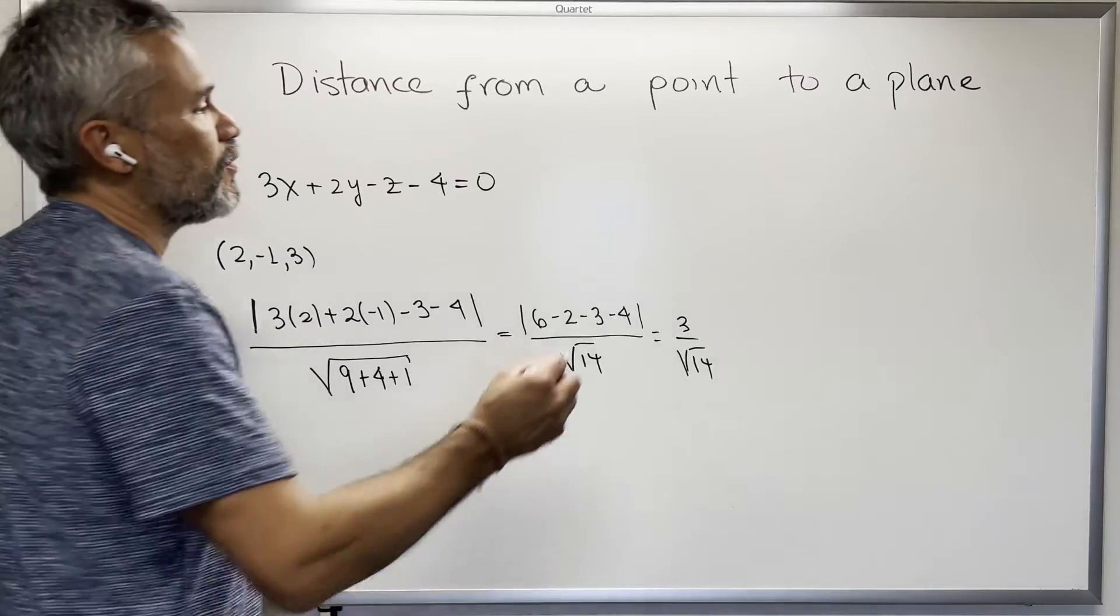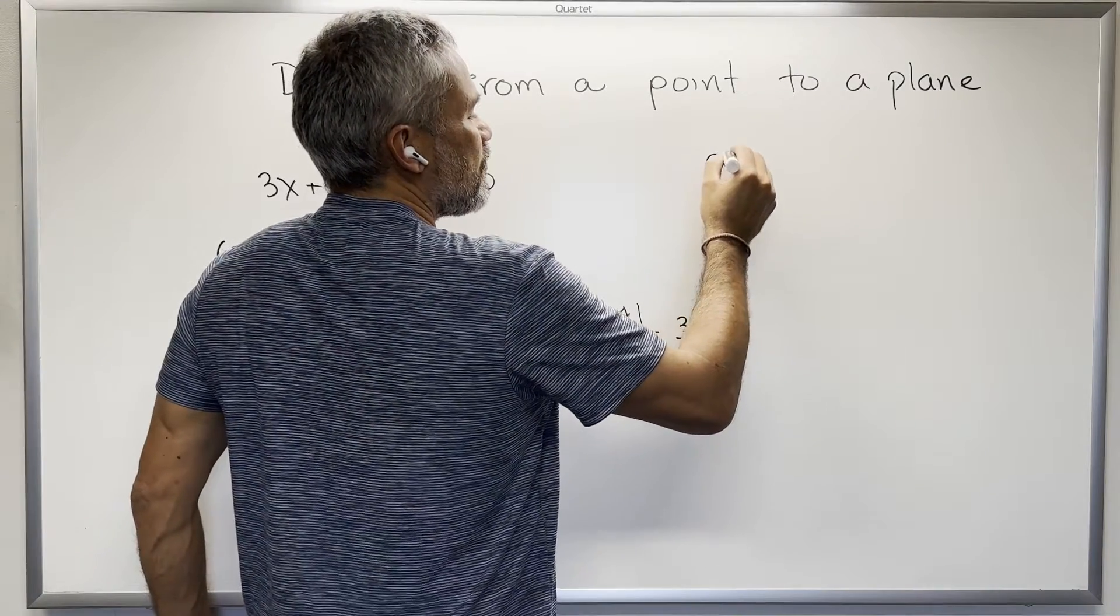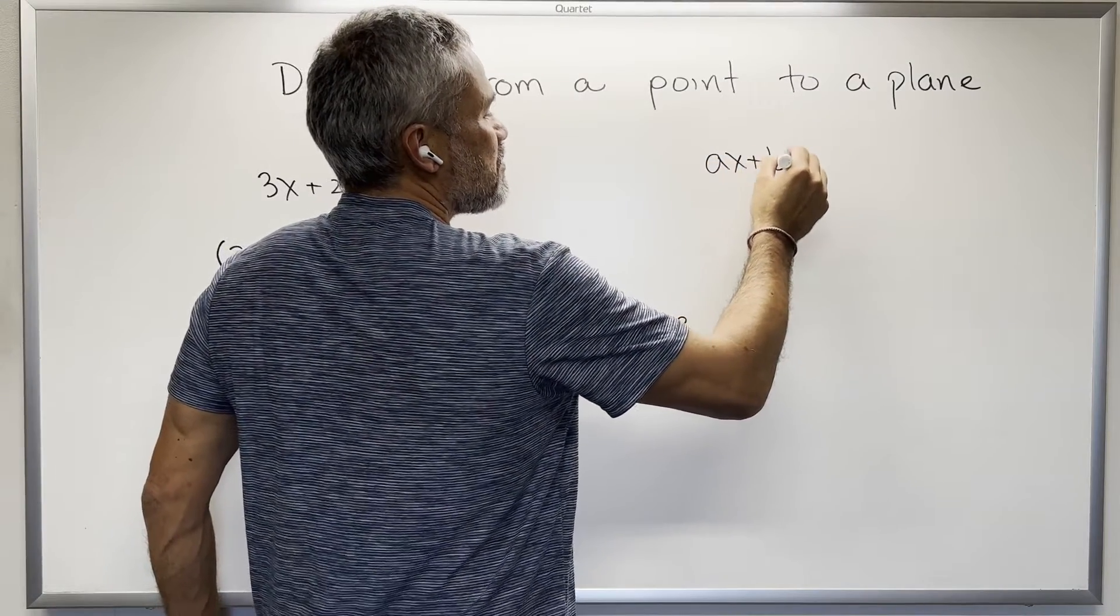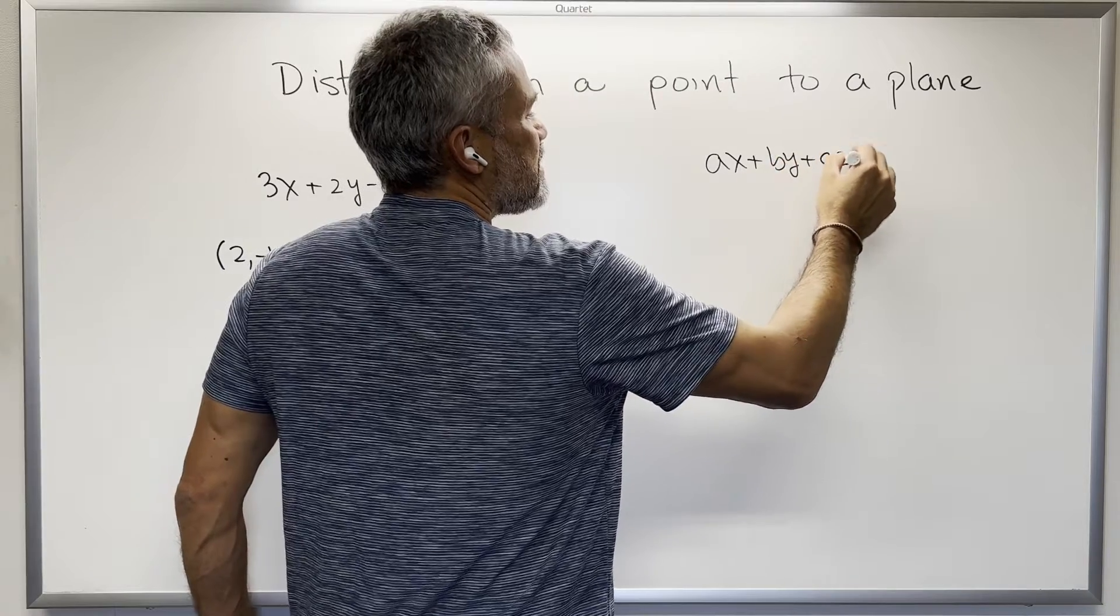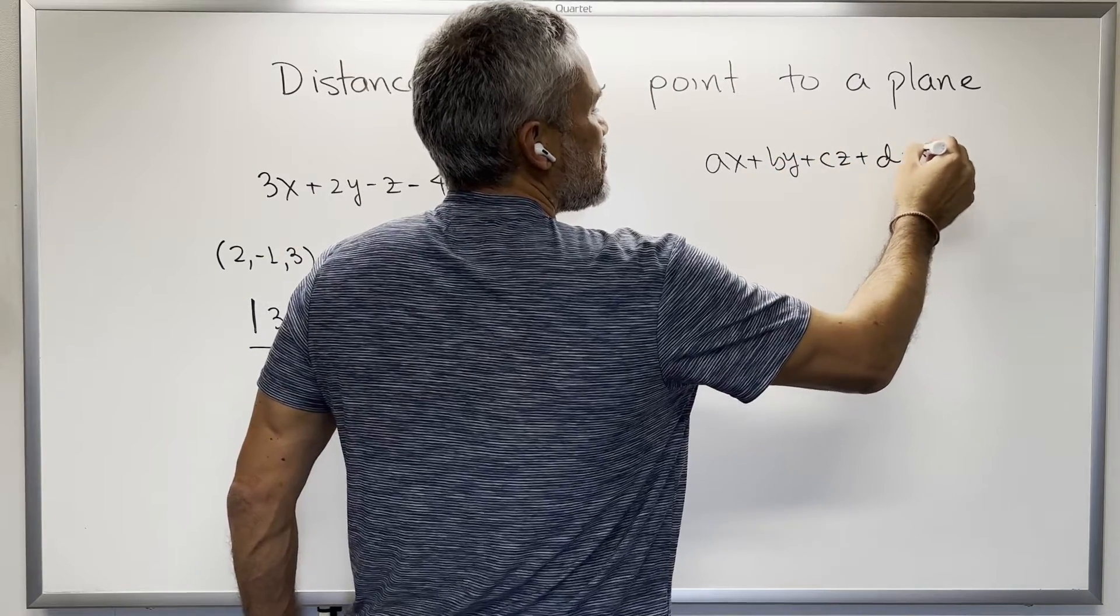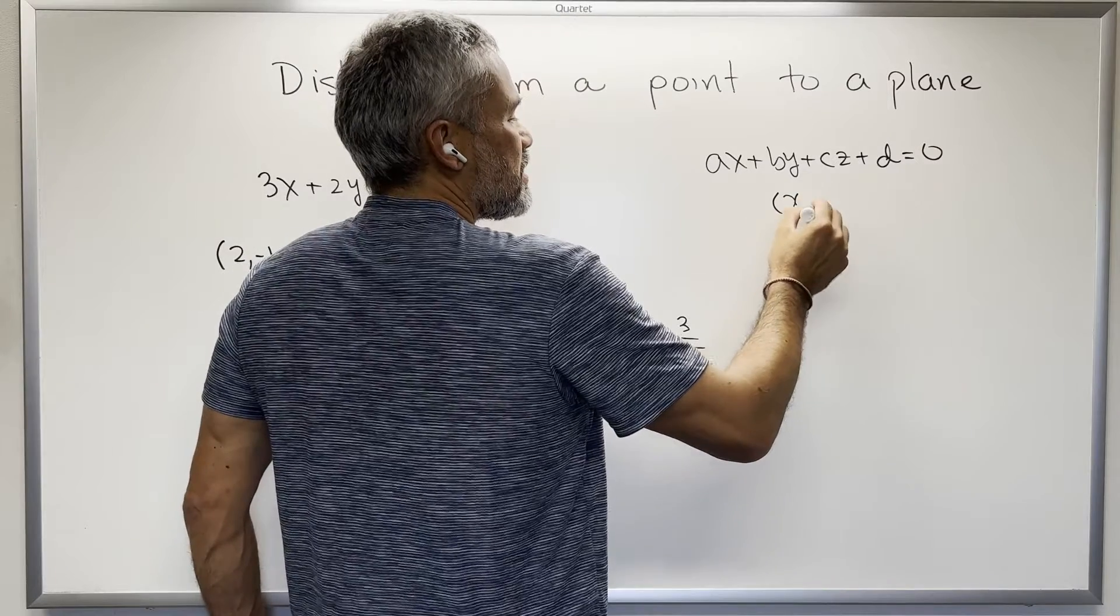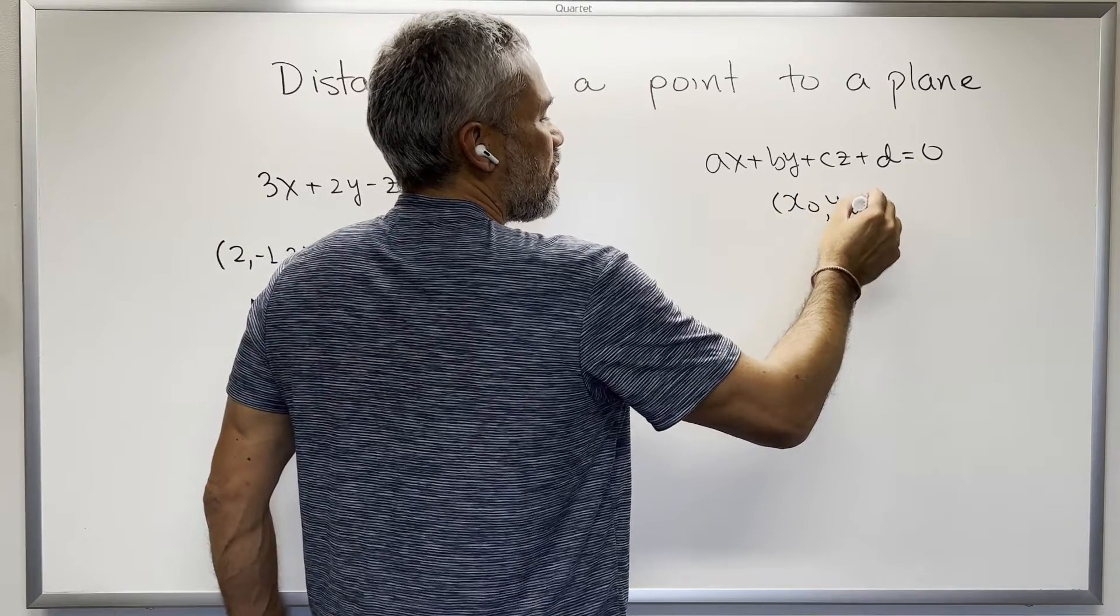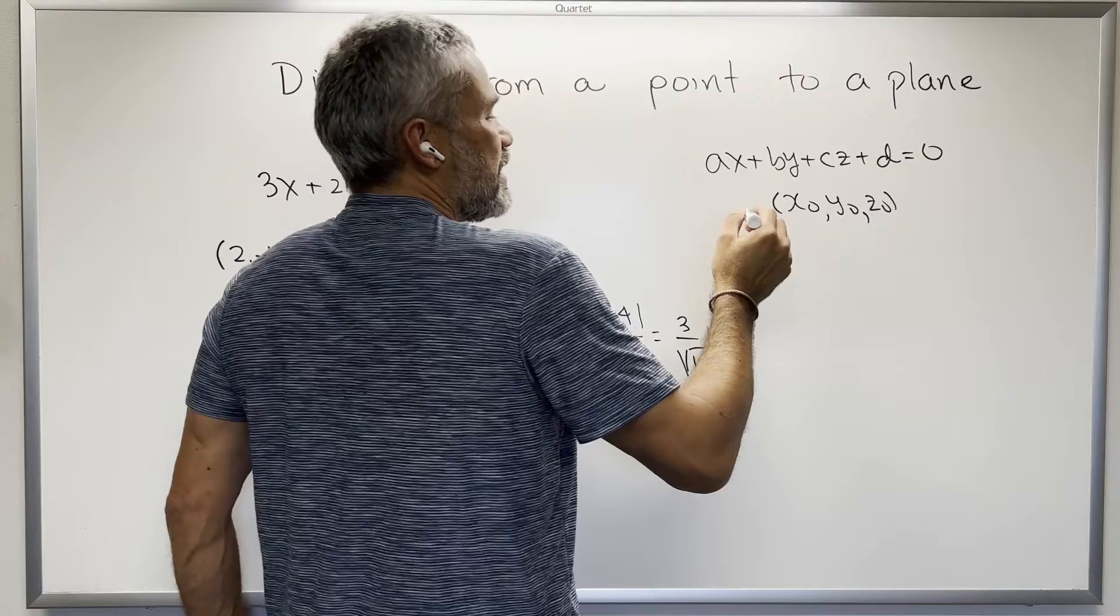In general, we have this formula. We have the plane ax plus by plus cz plus d equal to 0, and we have a point x0, y0, z0. Then the distance...